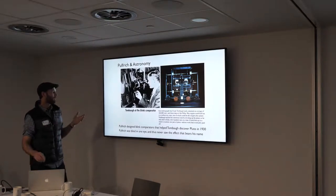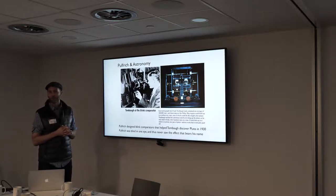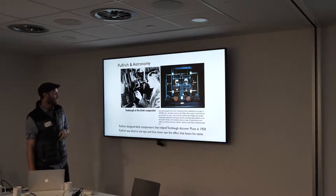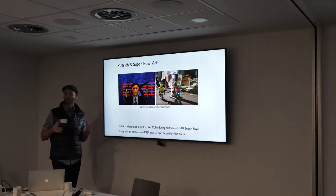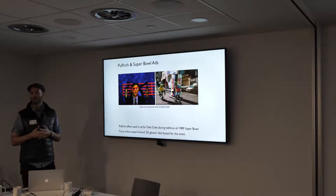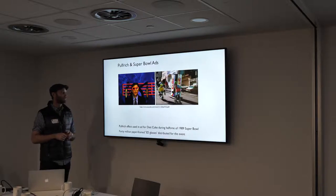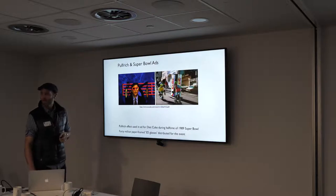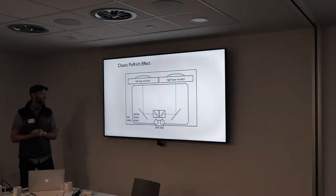An interesting aside: Pulfrich built a device that figured prominently in the discovery of planet Pluto. He was also blind in one eye, so he never actually saw the effect that bears his name. And in 1989 at the Super Bowl halftime show, Diet Coke released a commercial where, with the proper type of lens, viewers could take advantage of the Pulfrich effect to see a 3D movie of a Coke can barreling down steeply inclined streets in San Francisco.